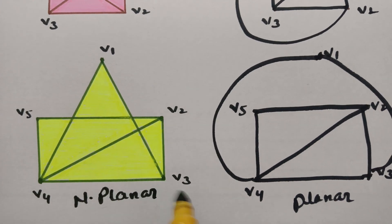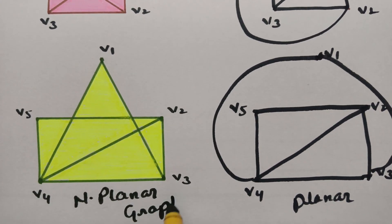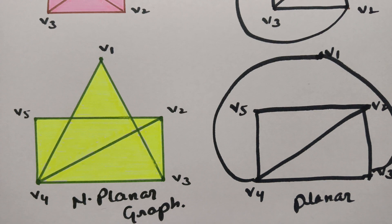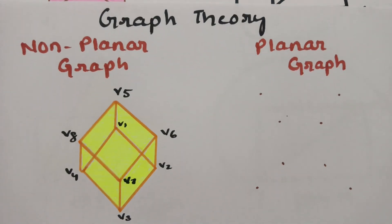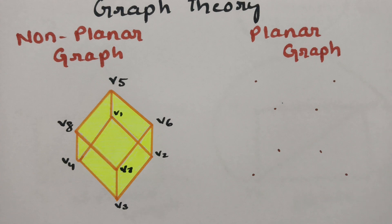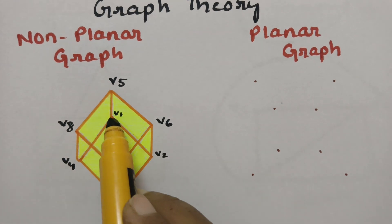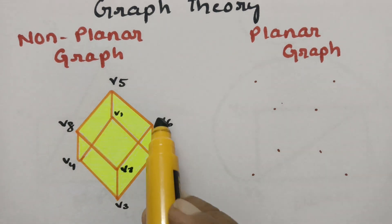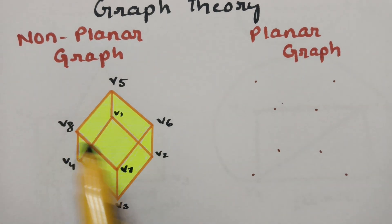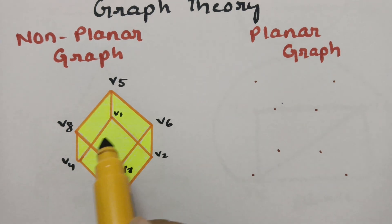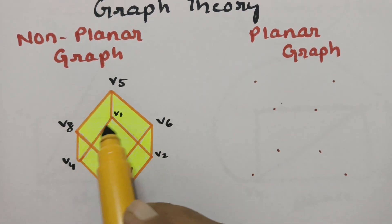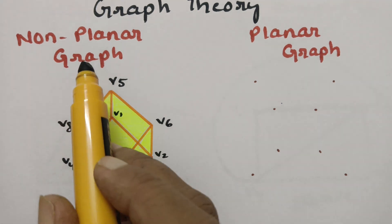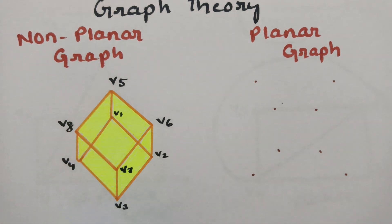Here is another example — this graph is a non-planar graph. There are 8 vertices: V1, V2, V3, V4, V5, V6, V7, and V8. There are so many edge crossings, so this graph is called a non-planar graph. Now I will redraw this one without edge crossing.